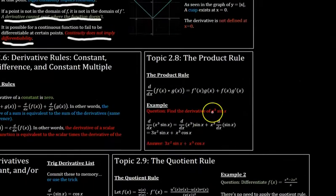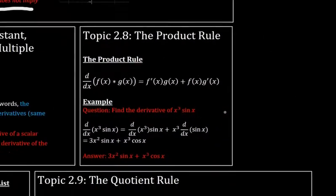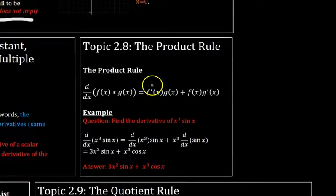So topic 2.8 is another important rule, the product rule, because it helps you differentiate the product of two functions. Basically, you take the derivative of the first one, f prime, multiply by the second one, g, and then add the first one times the derivative of the second one, g prime of x.